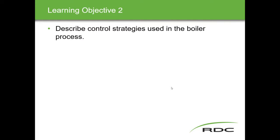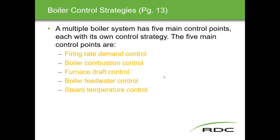Objective two: describe some control strategies used in the boiler process. A multiple boiler system has five main control points. We've talked about four with a single boiler, but with multiple boilers we talk about five, each with its own control strategy.